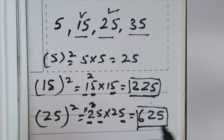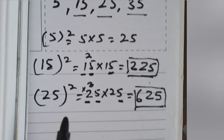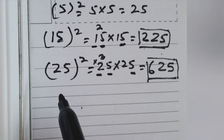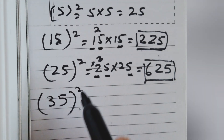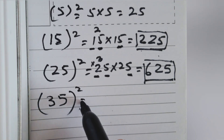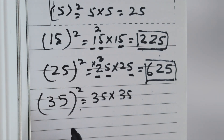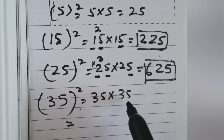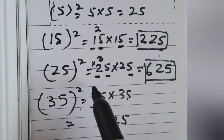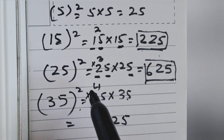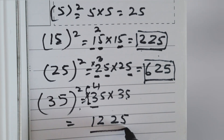Now let's do 35 squared, which is 35 multiplied by 35. Using the formula: first, 5 times 5 is 25. The next digit is 3, and the number after 3 is 4, so we multiply 3 times 4 to get 12. So the answer is 1225.